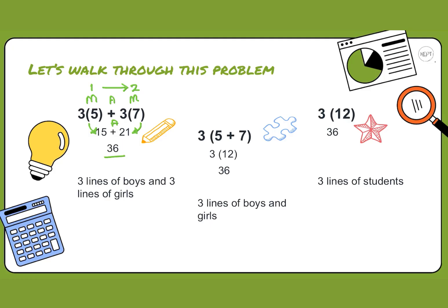15 plus 21 gives us a value of 36 students in total: five boys in each of the three rows and seven girls in each of the three rows. Another way of looking at this is to say that we have three lines of boys and girls.